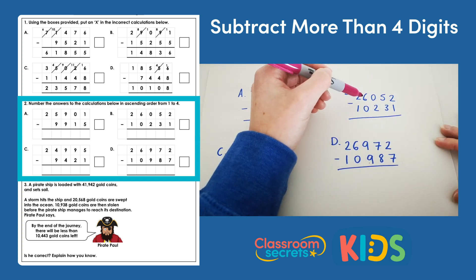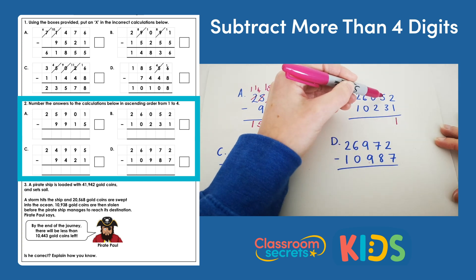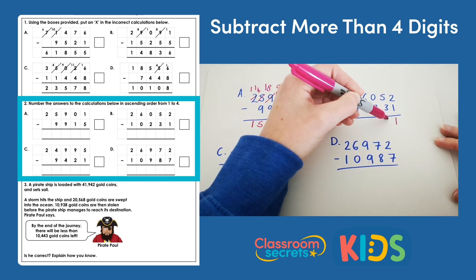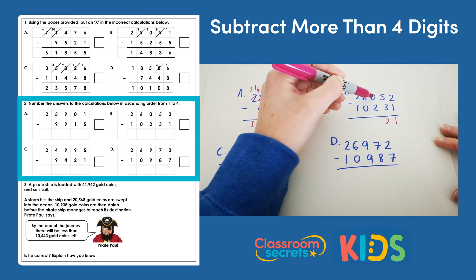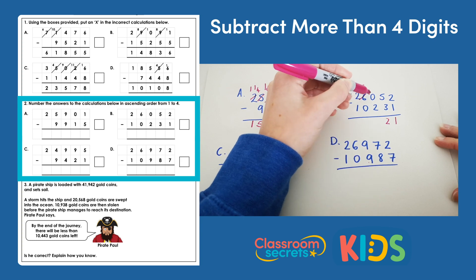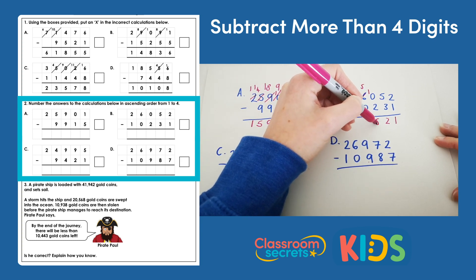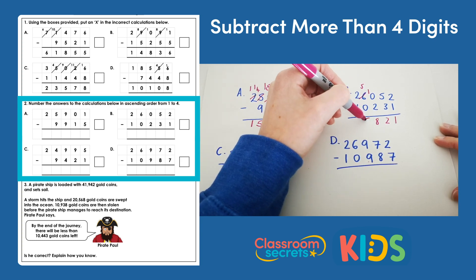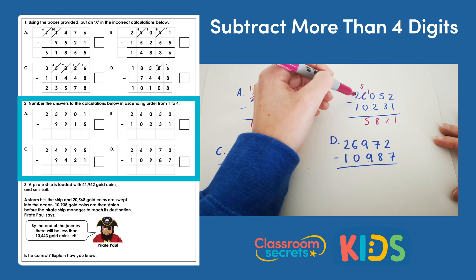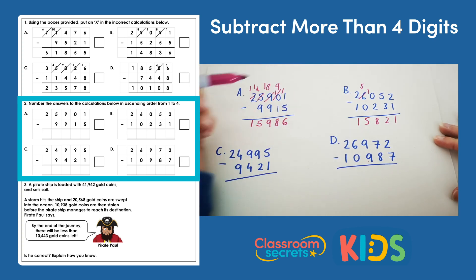B: 2 subtract 1 is 1; 5 subtract 3 is 2; 0 subtract 2 — we can't do, so we need to do an exchange, and then we do 10 subtract 2, which is 8; 5 subtract 0 is 5; and 2 subtract 1 is 1, giving us 15,821.